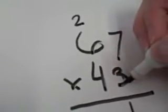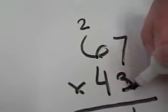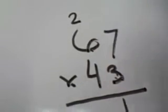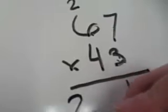The next thing I'm going to do is my 3 times my 6, or my ones times my tens. 3 times 6 is 18, plus 2 is 20. Write that down here.